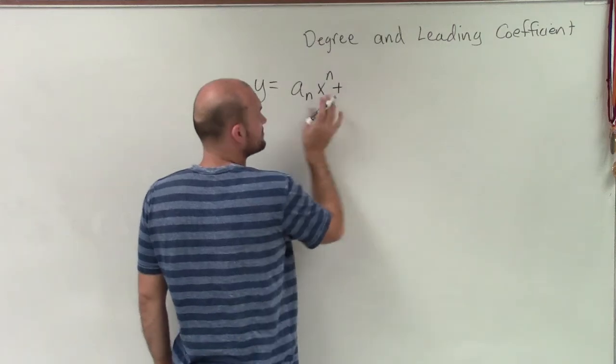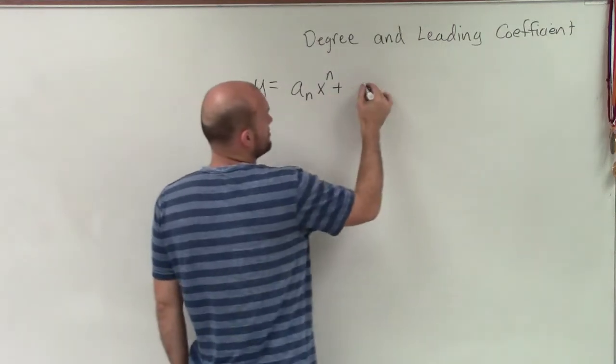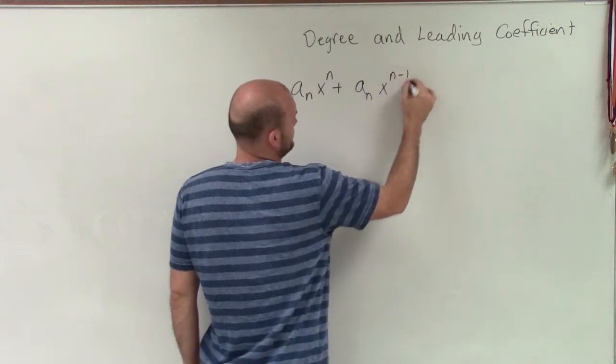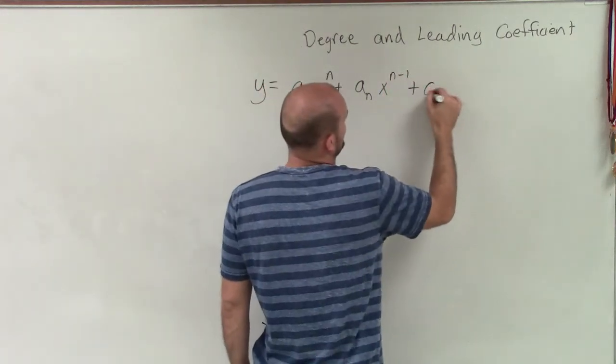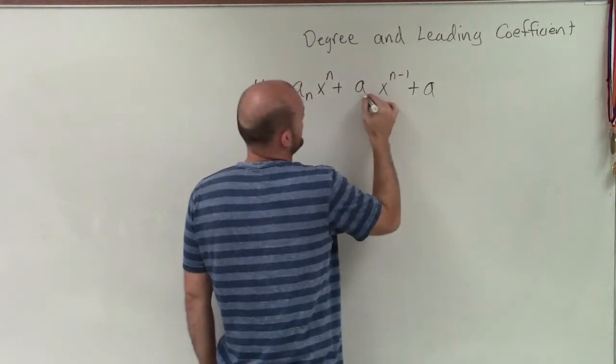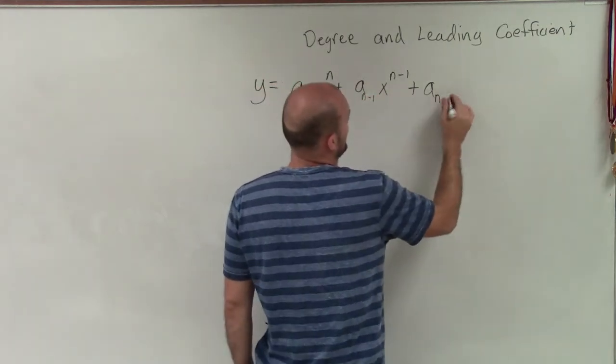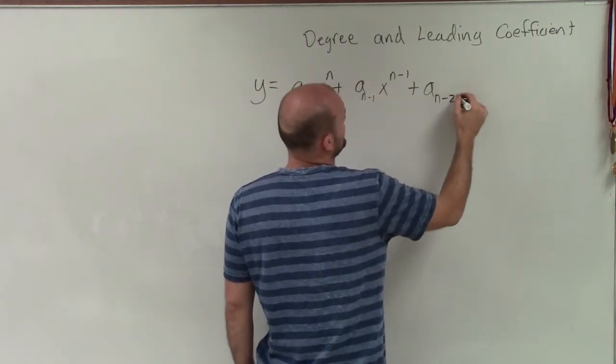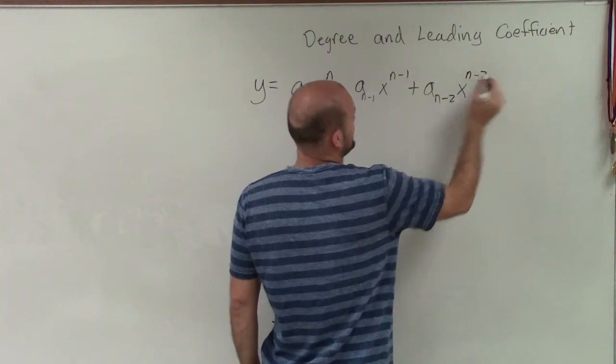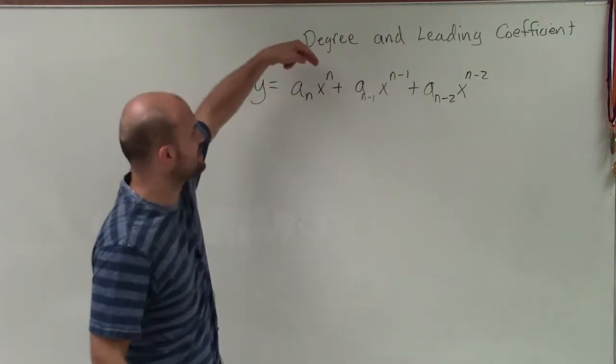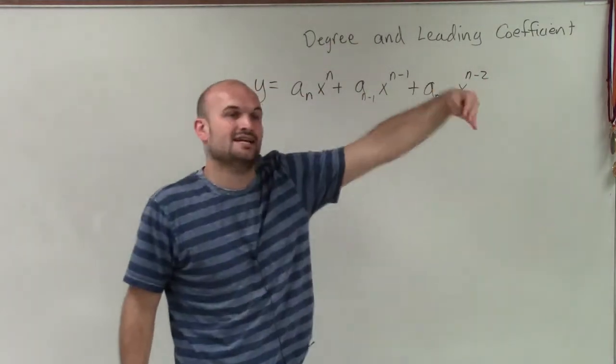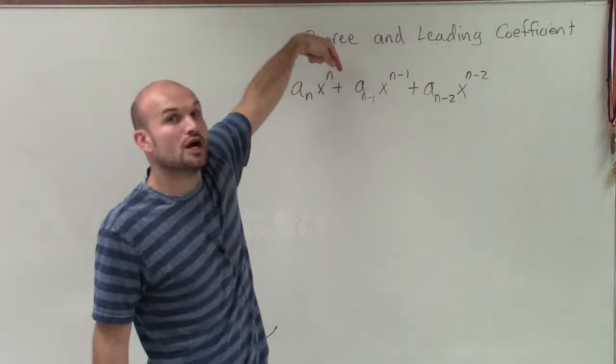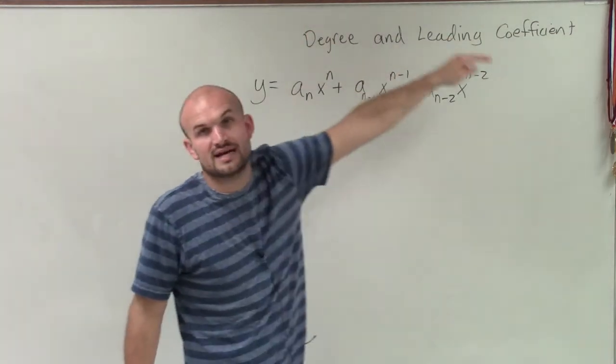and it's going to be the sum of monomials. And then what we have is plus a to the n minus 1. This would be a to the n minus 2 times x to the n minus 2. And this keeps on going down. And what this is representing is your exponents are going down in descending order, meaning you're always going to want your largest exponent first and then going down in descending order.